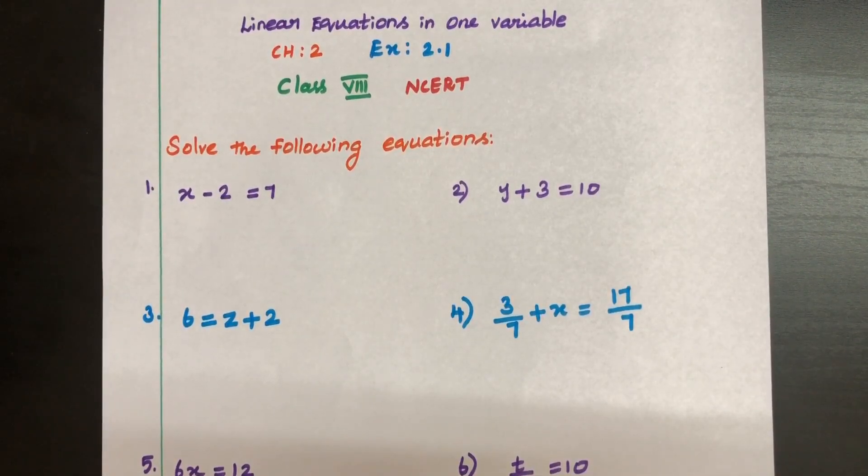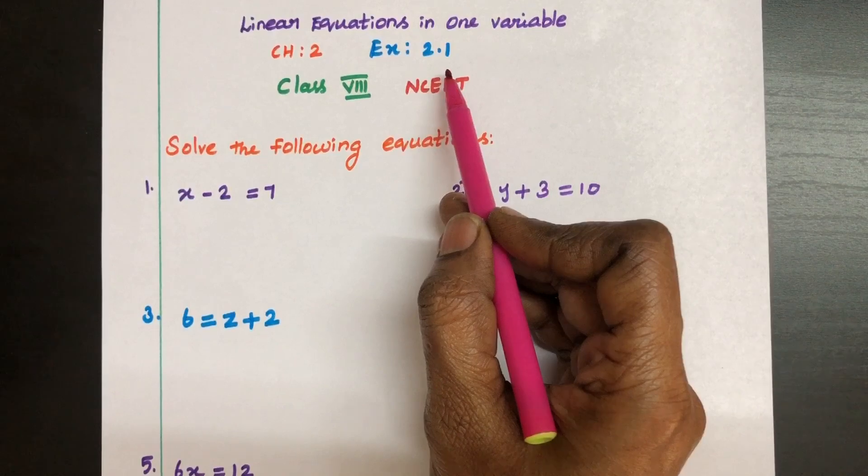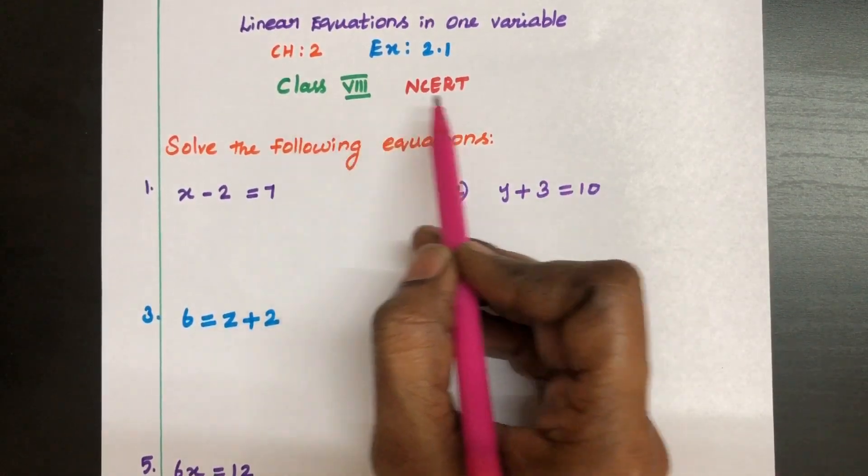Hi friends, welcome to Simplify Maths. Today we are going to learn linear equations in one variable chapter 2 exercise 2.1 for class 8 in NCRT book.